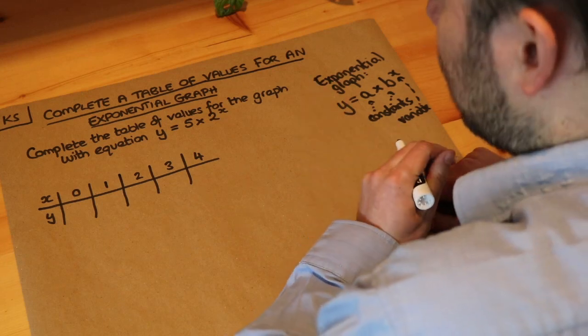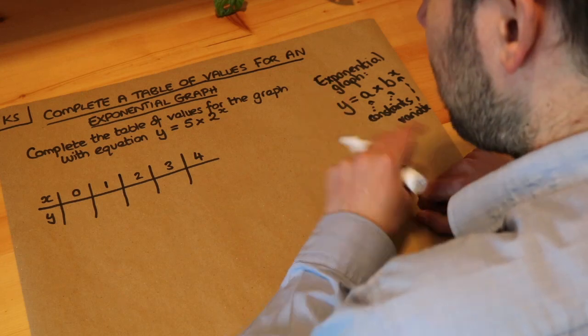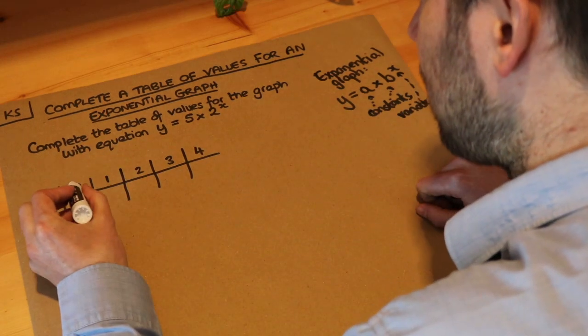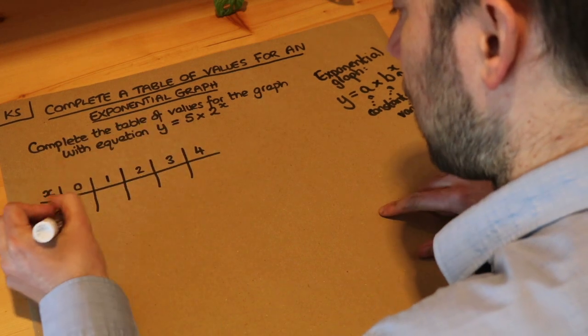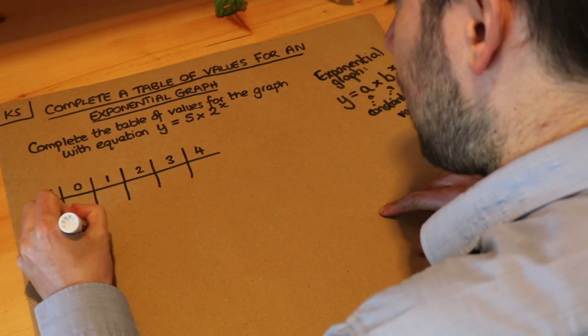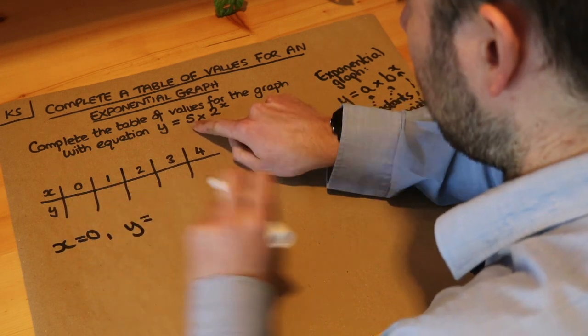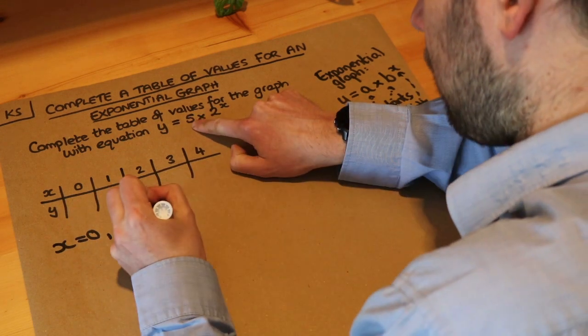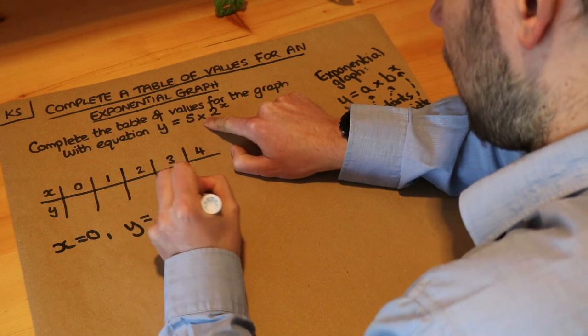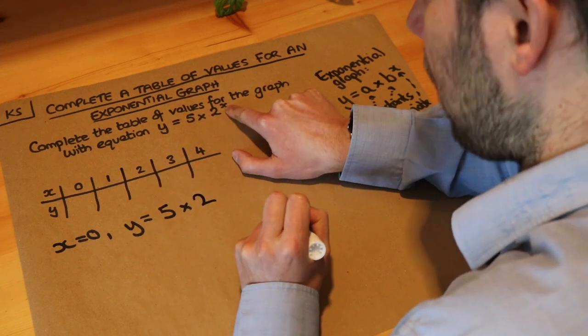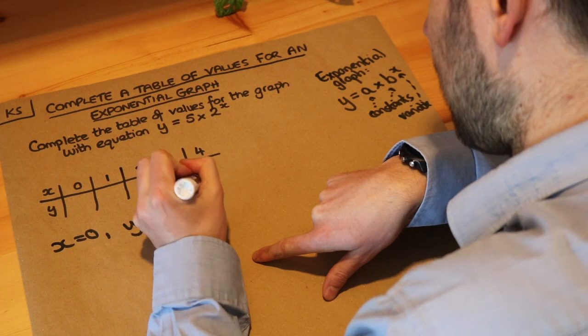So all we need to do is just substitution as we do for plotting any graphs. When x is zero, let's work out each of these values of y. When x is zero, then the y value will be equal to, if we use this equation, it's five multiplied by two to the power of x. Well, x here is zero in this particular case.